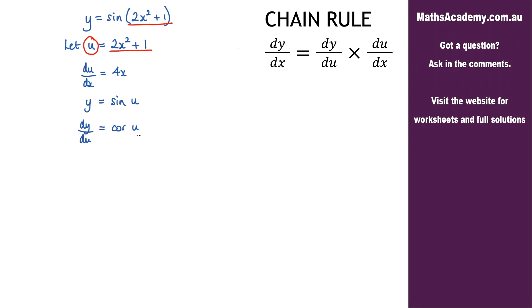Now that I've got dy by du and du by dx I can apply the chain rule. So dy by dx is equal to dy by du multiplied by du by dx.